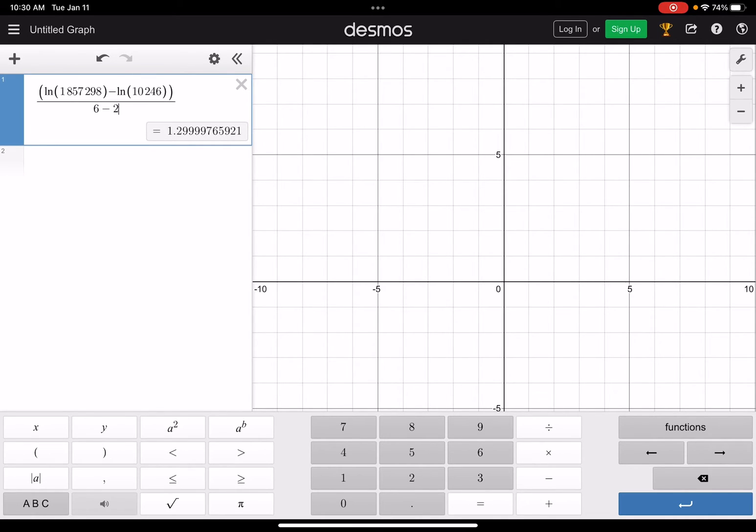And just like that, we get the slope between these two points to be about 1.299999 or about 1.3.